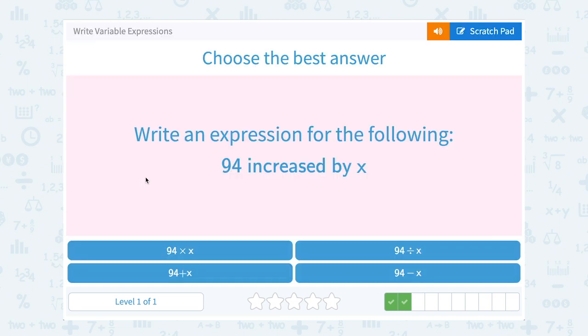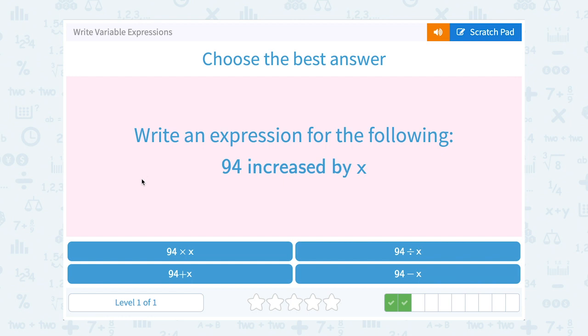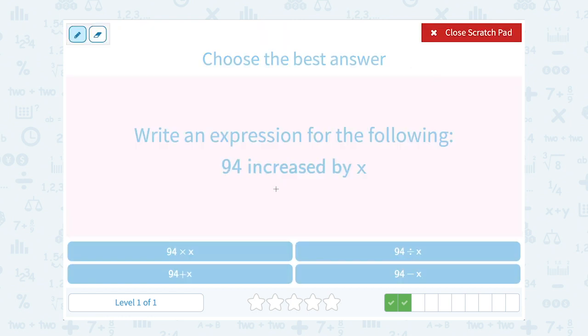Write an expression for the following, 94 increased by x. We have to think about what increased is telling us to do. So if we already have 94, and then we increase it by x, that means we're adding x more, or we're making it bigger by x number. So that would be 94 plus x.